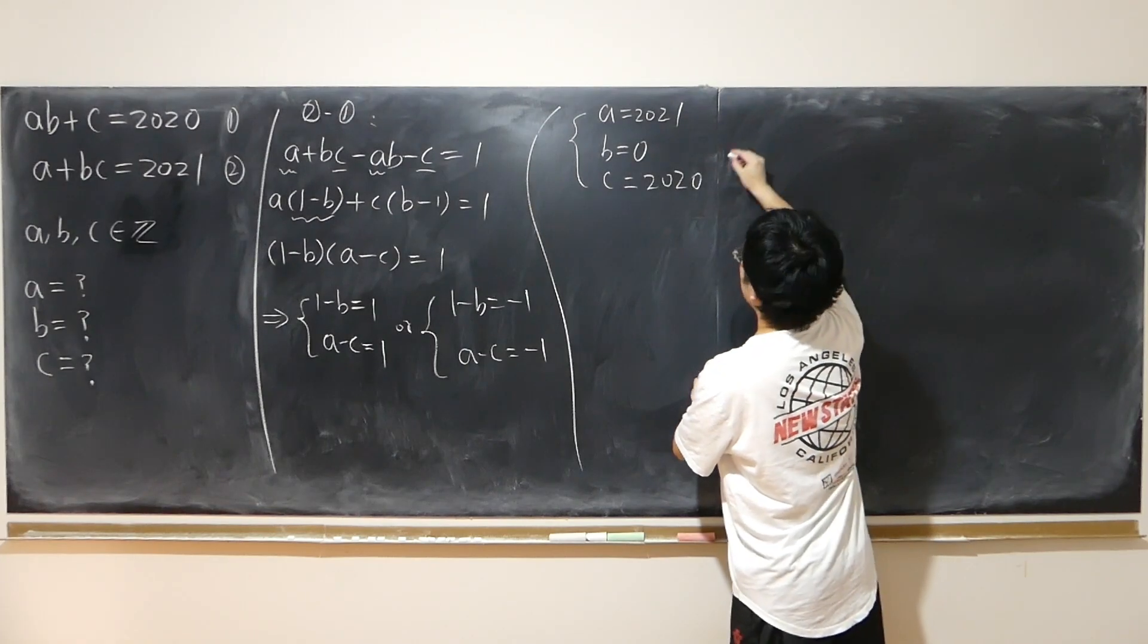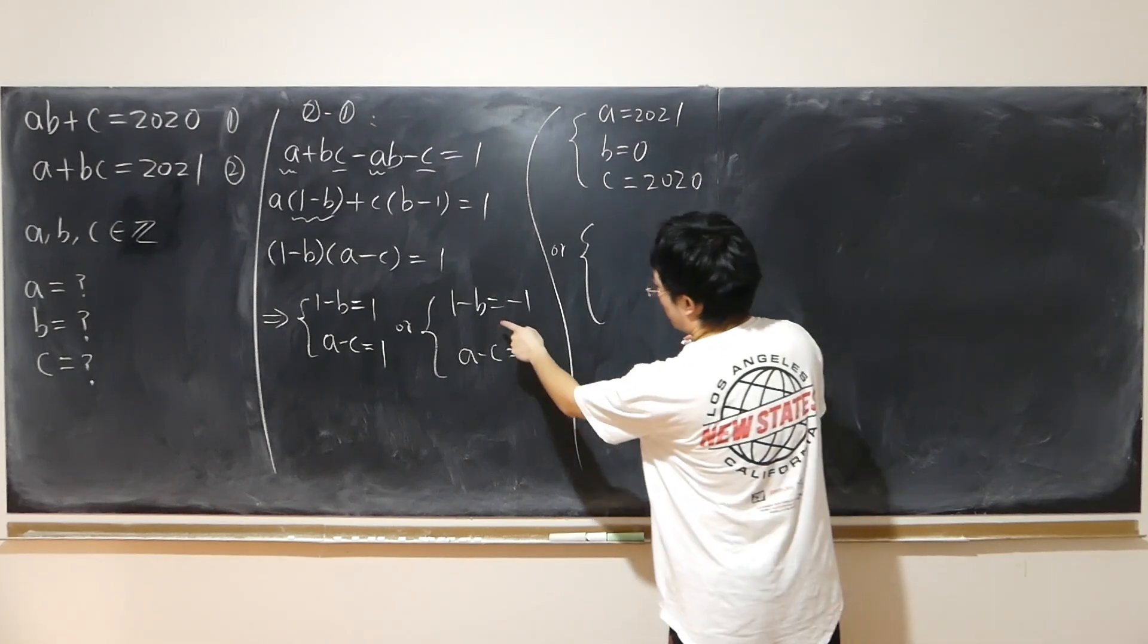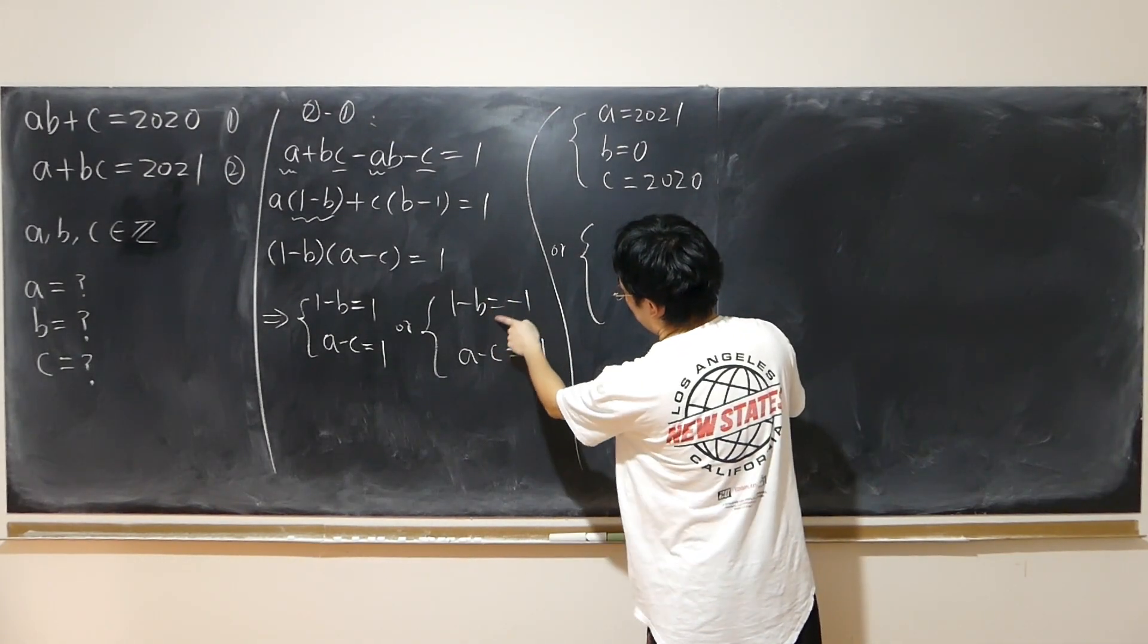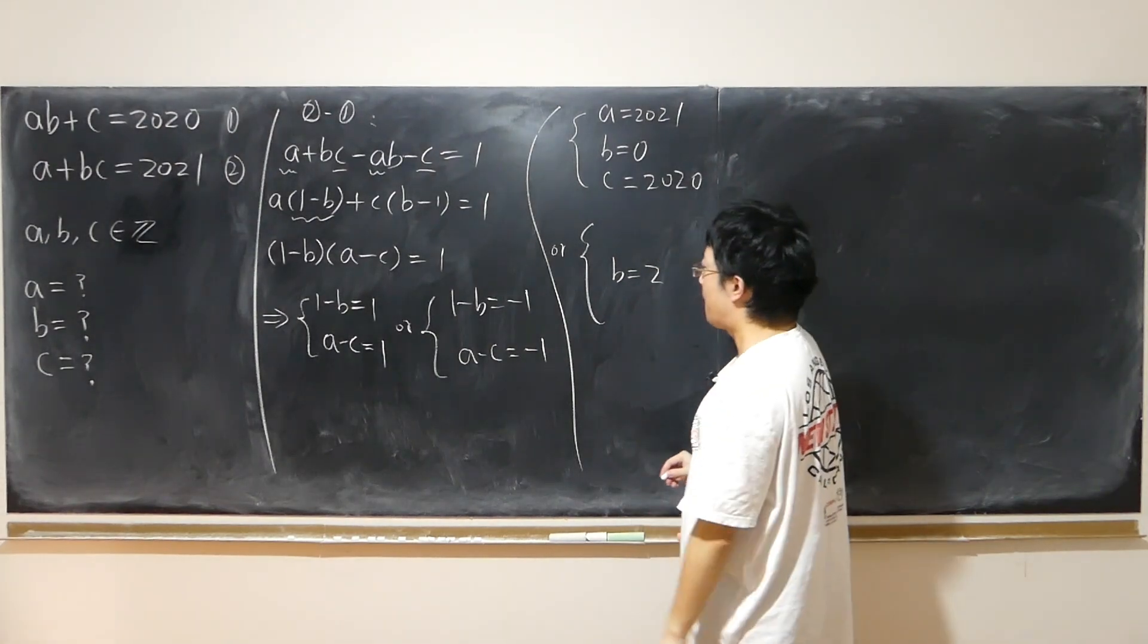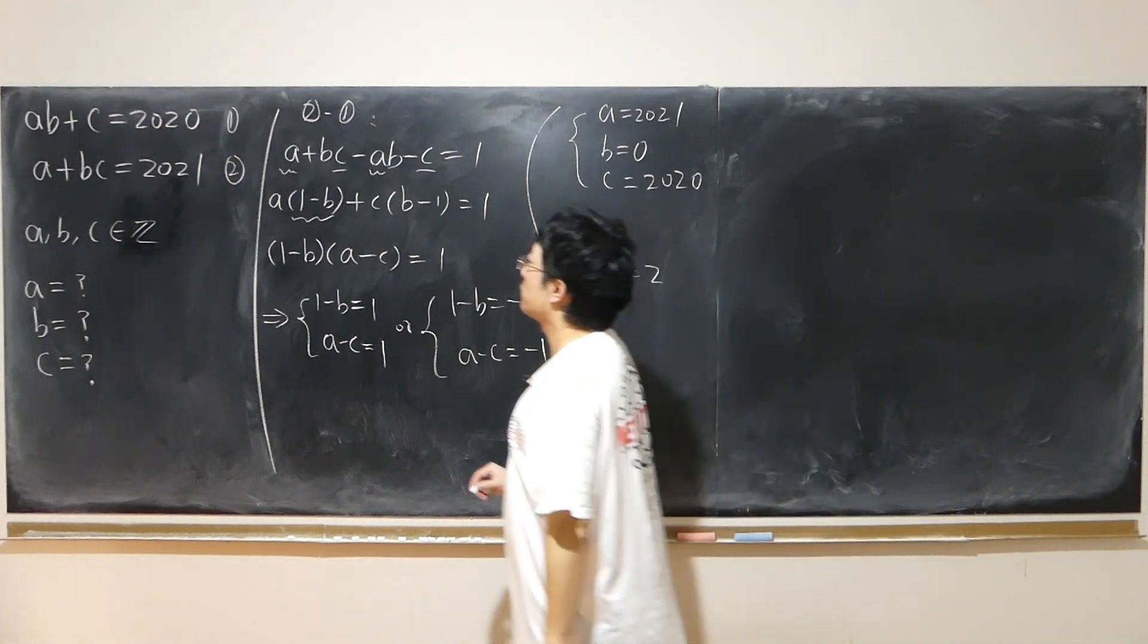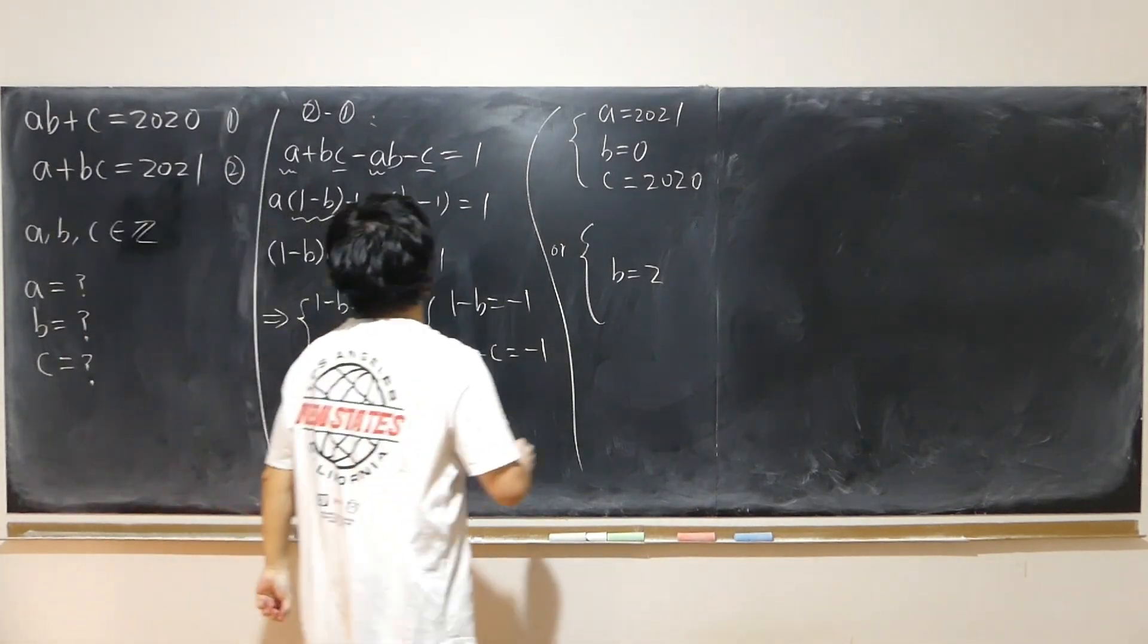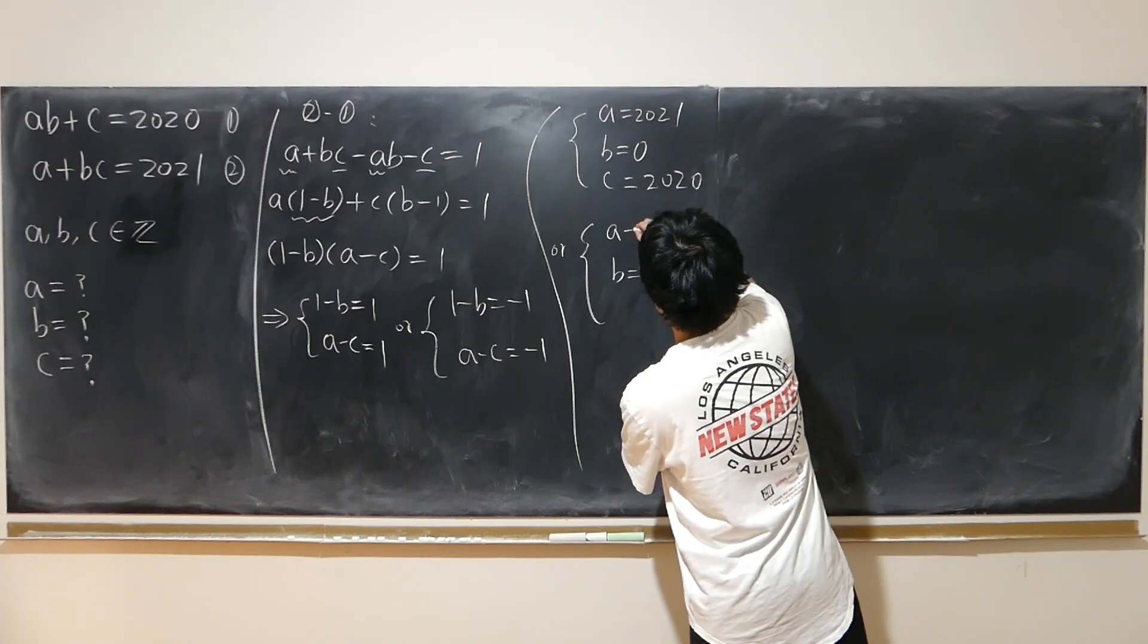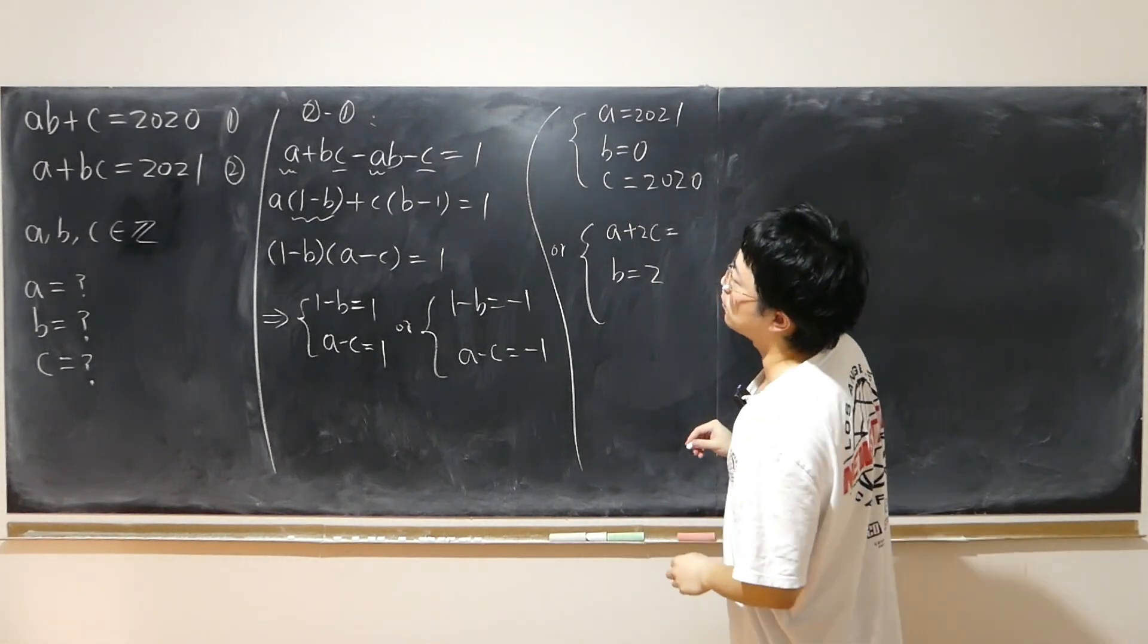And second possibility is when you have b is equal to 2. Then you can have, let's use this one. So a plus 2c, a plus 2c equals 2021.